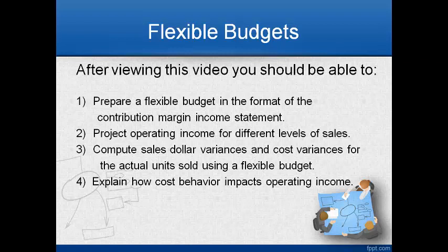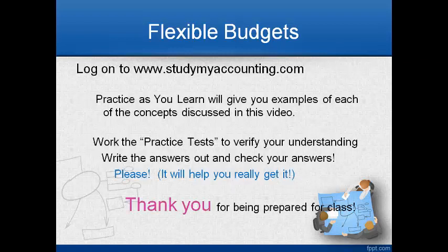After viewing this video, you should be able to prepare a flexible budget in the format of a contribution margin income statement and project operating income for different levels of sales. Compute sales dollar variances and cost variances for the actual units sold using your flexible budget, and explain how cost behavior impacts operating income. Please go to studymyaccounting.com. Practice examples of each concept discussed in this video and work the practice test to verify your understanding. Write the answers out and check them against the answers and explanations provided — it will help you to really get it. Thank you for being prepared for class.